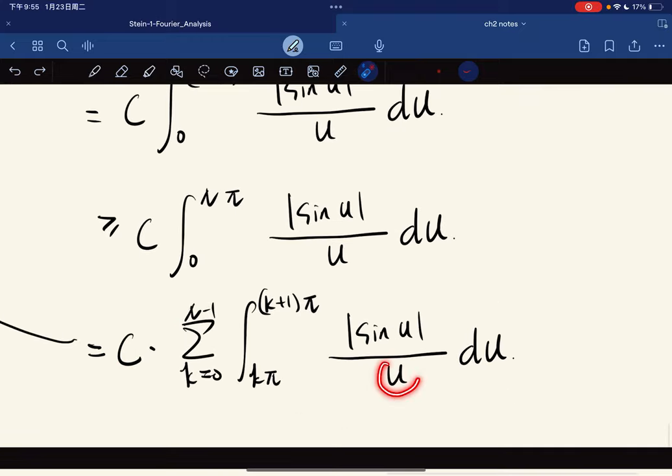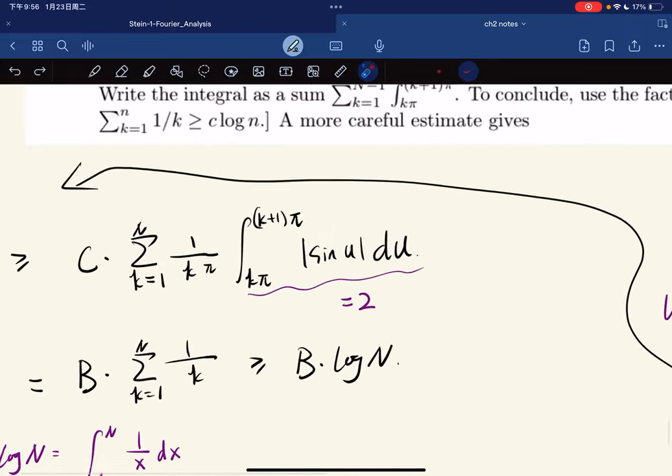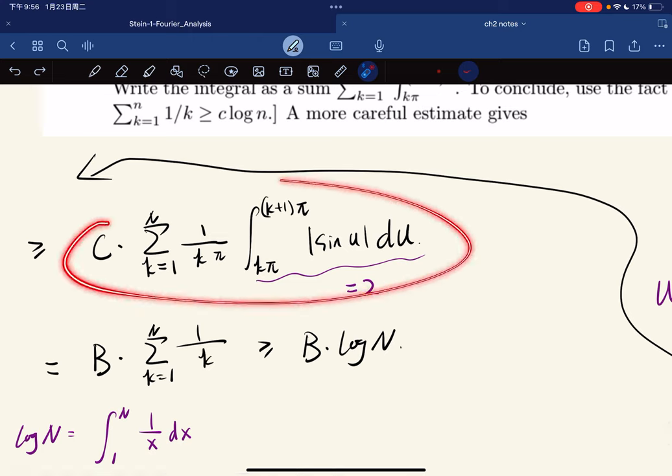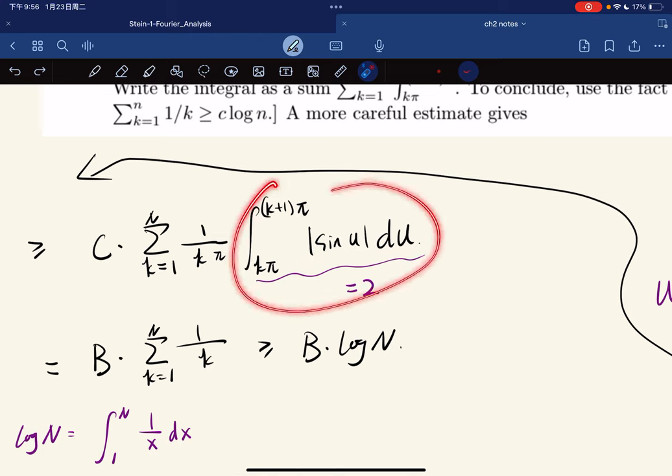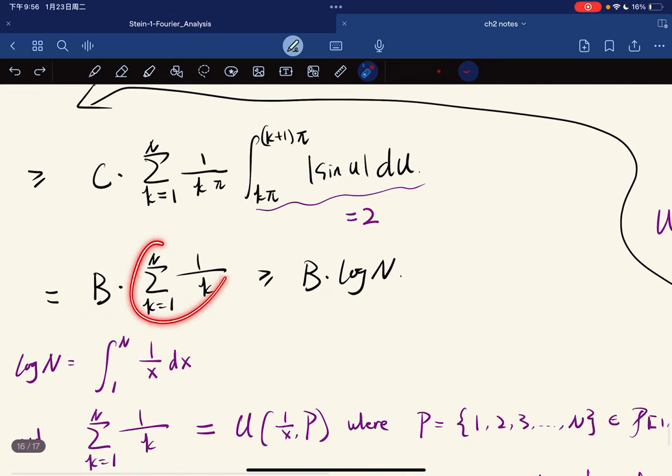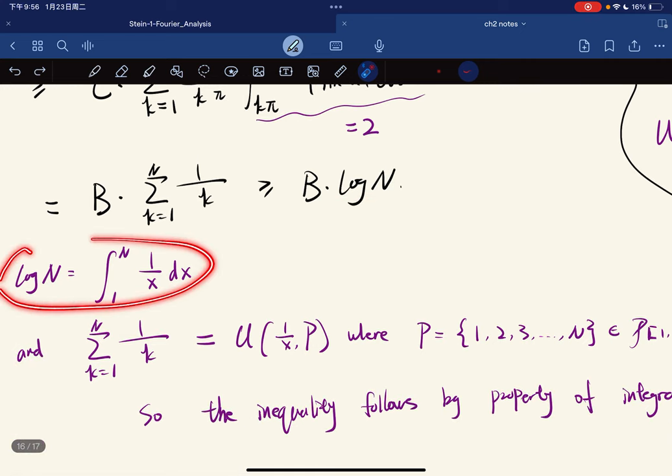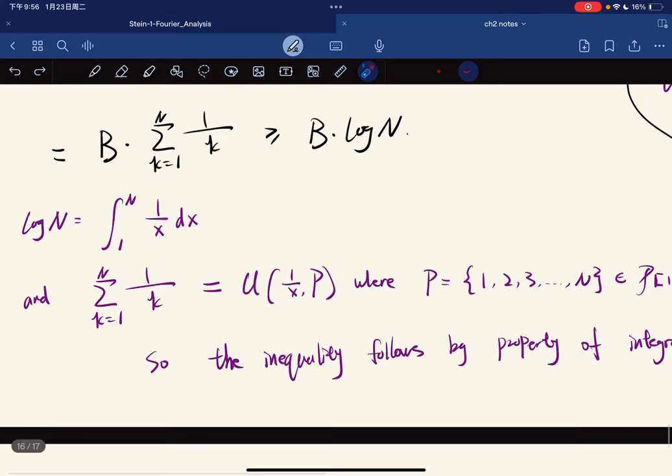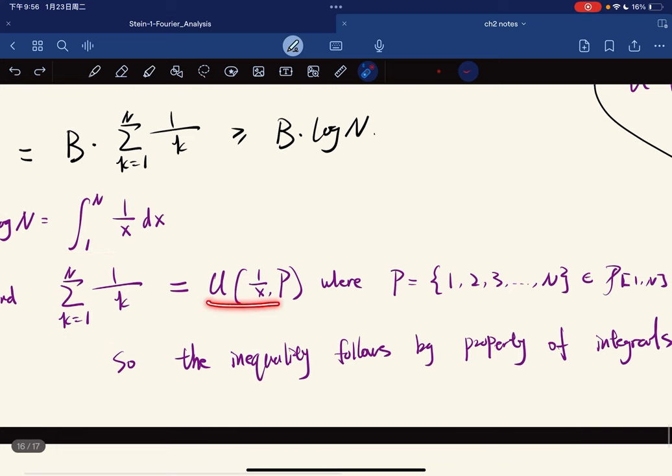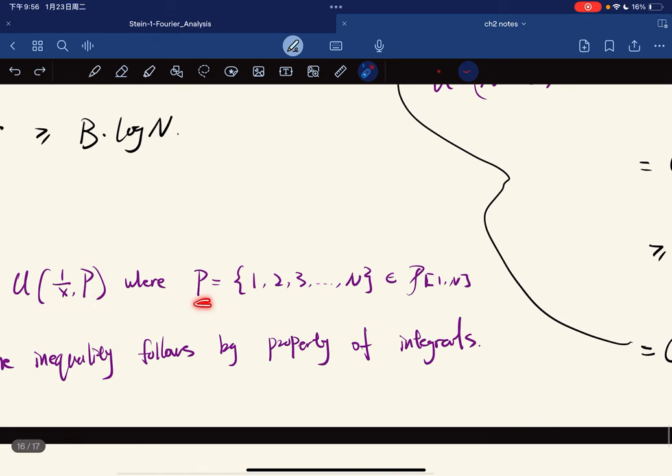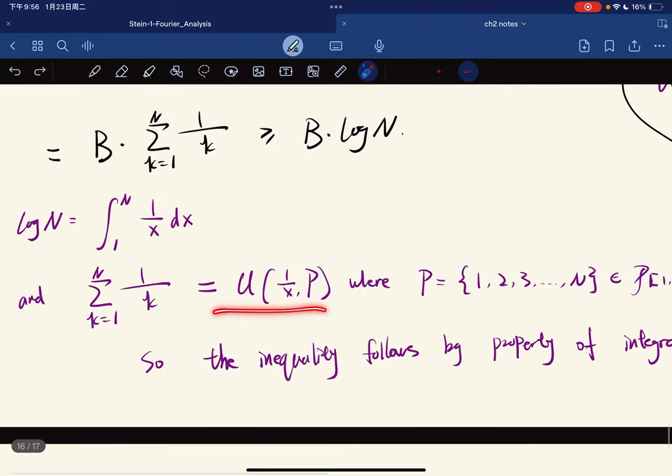We break them apart using telescoping on the integral signs. Because u is between kπ and (k+1)π, it's greater than or equal to (k+1)π. So we do some rearrangement. The sin(u) is left, and this thing is a constant we can pull out. This is greater than some constant times log n because log n is the integral of 1/x.